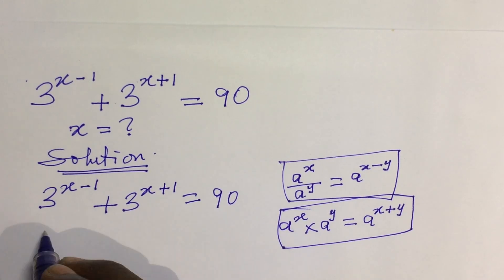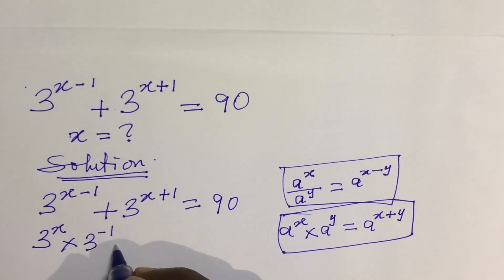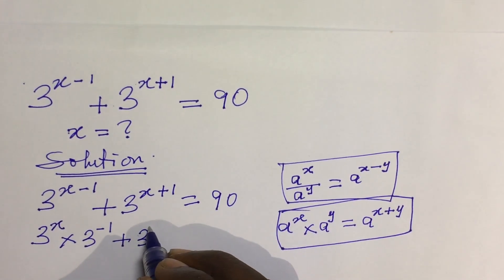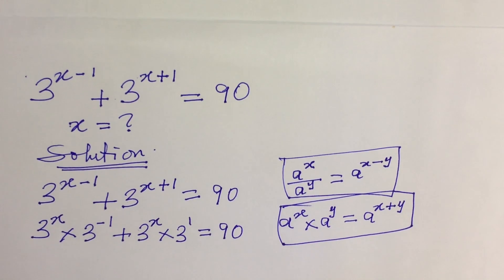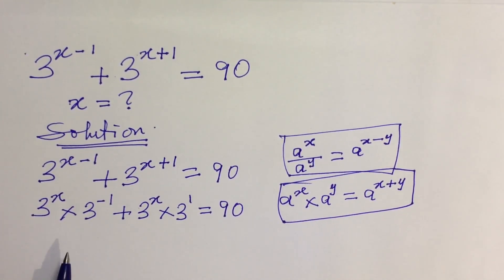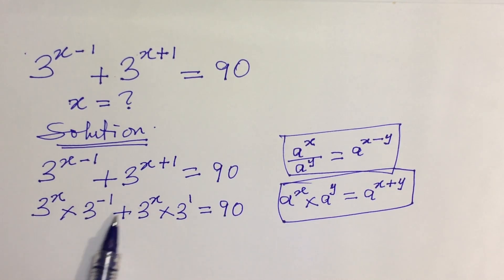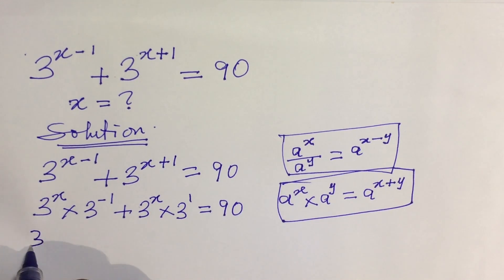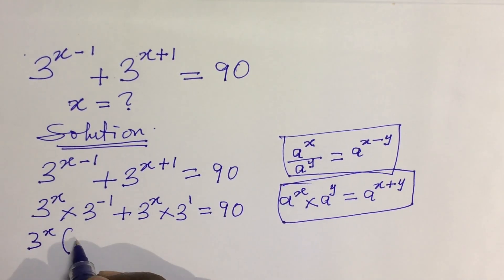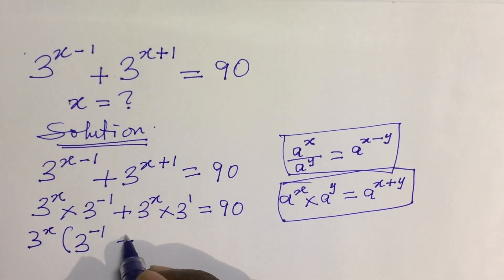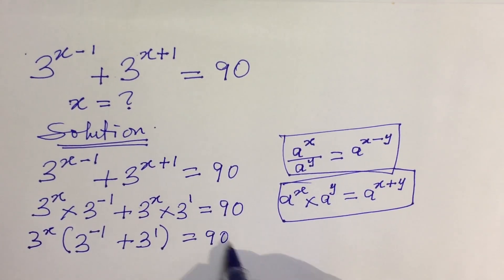Applying these two rules, we can rewrite the expression as: 3 to the power of x times 3 to the power of minus 1, plus 3 to the power of x times 3 to the power of 1, everything equal to 90. Now if you watch carefully, we have 3 to the power of x appearing in both terms, so let's factor out 3 to the power of x. We get: 3 to the power of x, bracket, 3 to the power of minus 1 plus 3 to the power of 1, close bracket, equals 90.